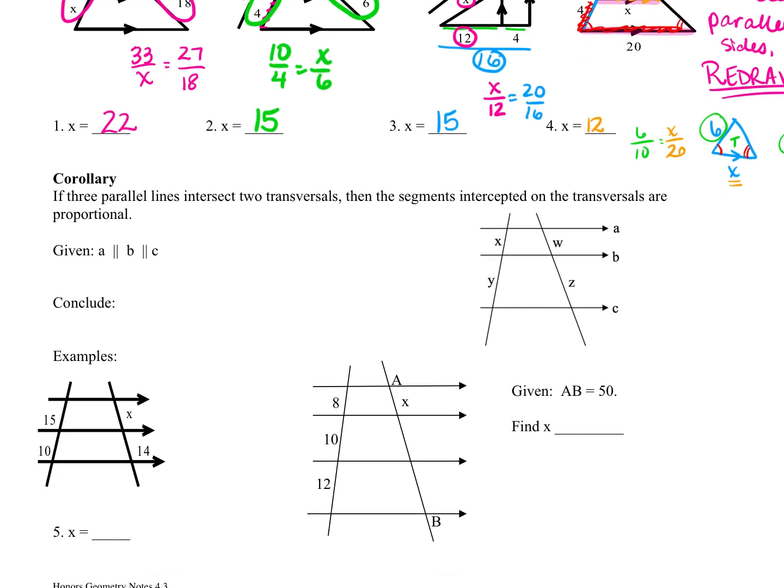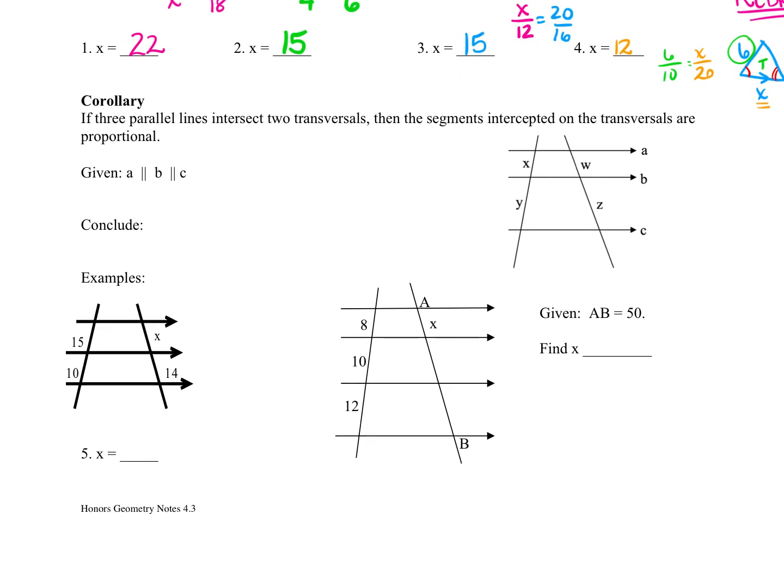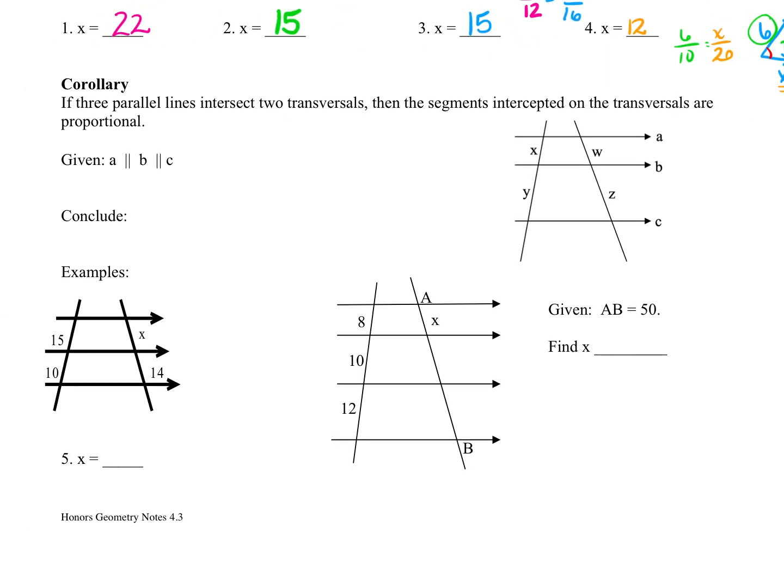So then we have what's called a corollary, which basically means that it correlates to what we were just talking about, but it's not exactly the same. And so when we have, I call these, they kind of look like a ladder, so they're kind of like ladder problems. So we'll set up the proportions for these, just like we did on that first example, first and second one on the last section. So we can say that X over Y will be equal to Y over Z, and so these are pretty easy. When all three of these lines are parallel, A, B, and C, we can set up the proportion just the way our picture looks.